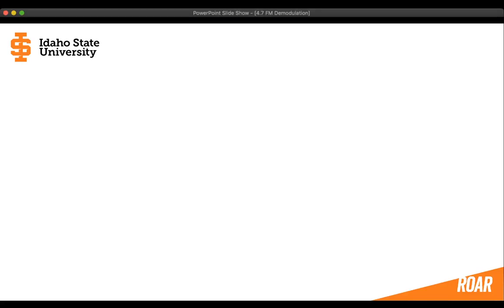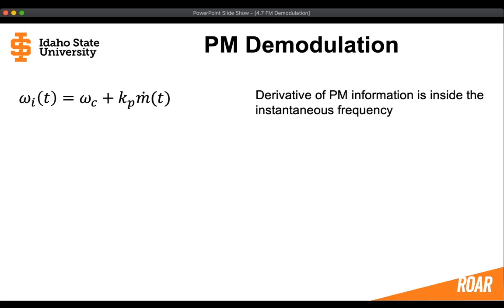Now let's consider how we can take a phase modulated signal and demodulate it so that we can recover the original message. The instantaneous frequency of a phase modulated signal is going to contain the derivative of the message. The information in a phase modulated signal is really contained in the way that we're changing the angle directly, but the instantaneous frequency is related to the derivative of the message.